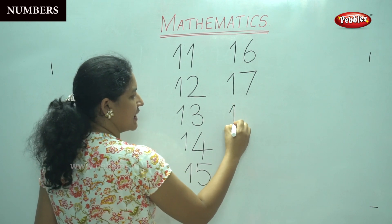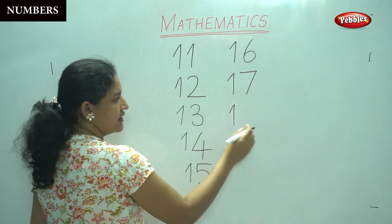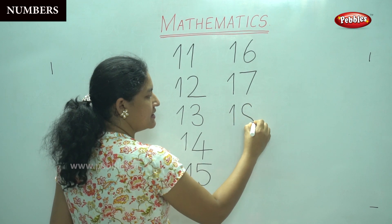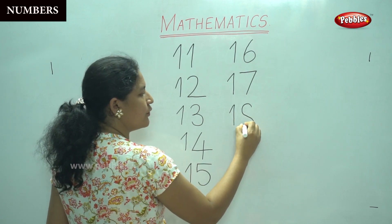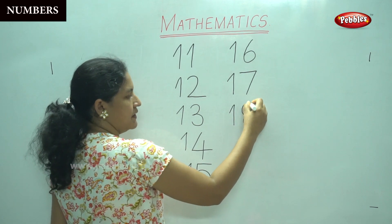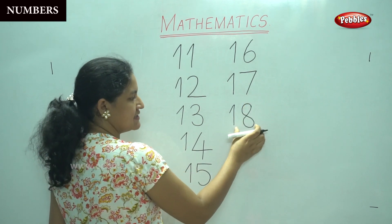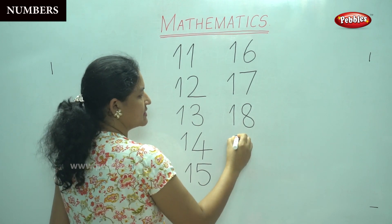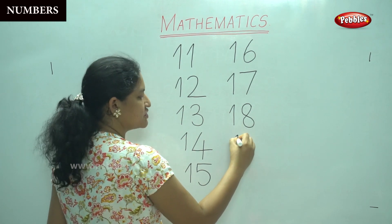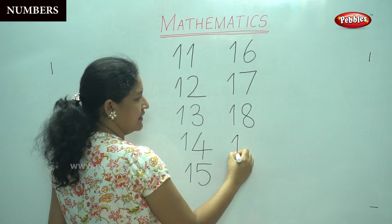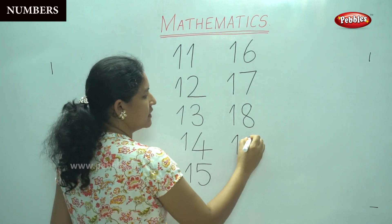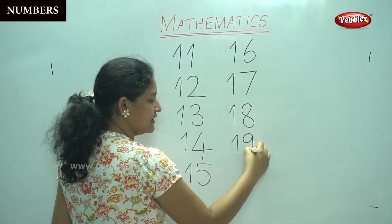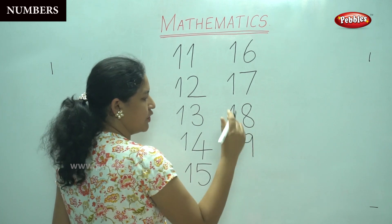Slanting line, straight line, number one, an S and you will continue up. This is number 18. Slanting line, straight line, number one, an O with a line, straight line going down. This is number 19.